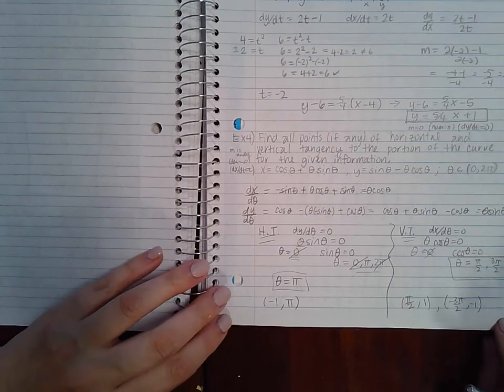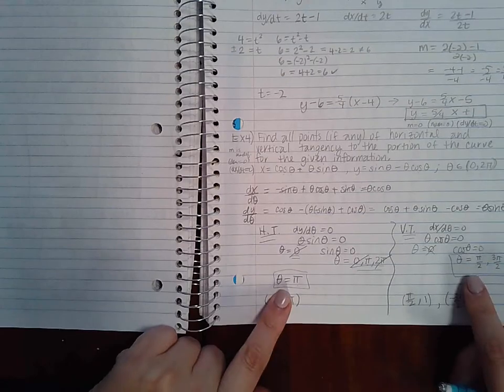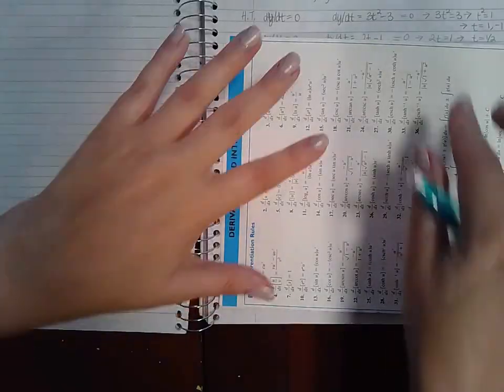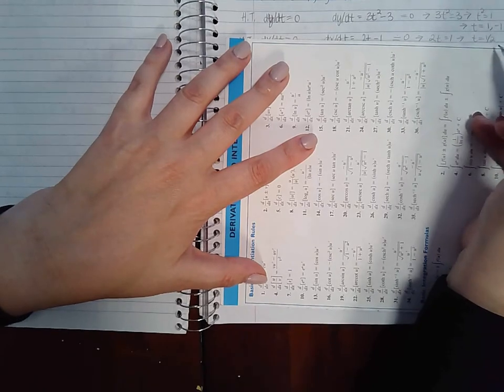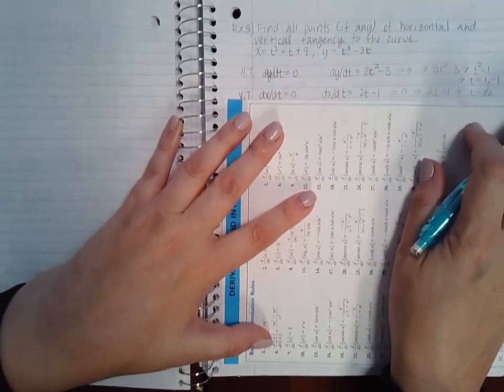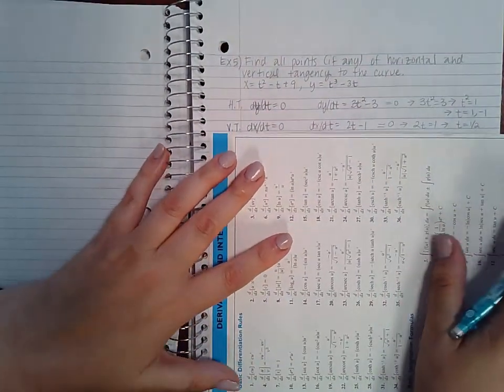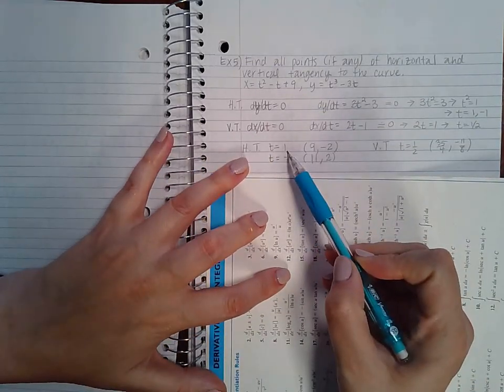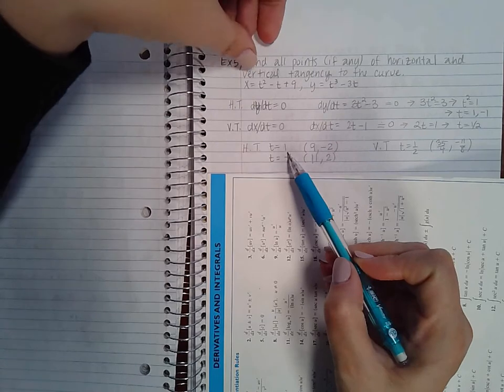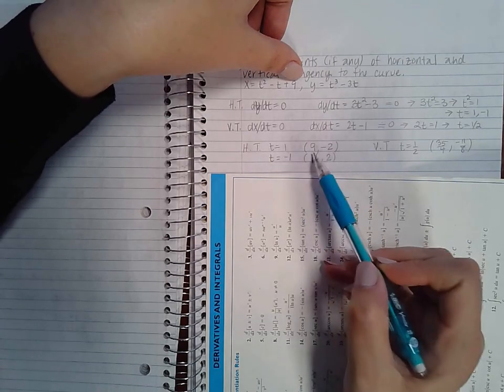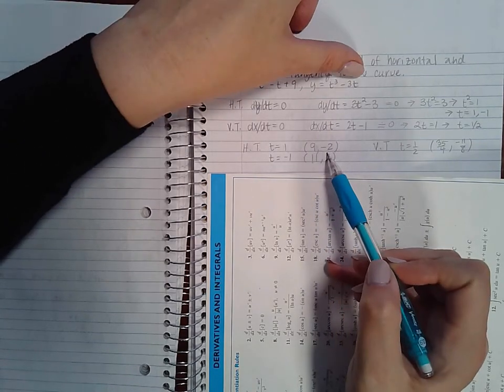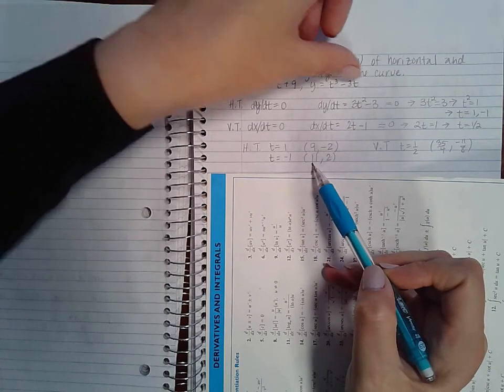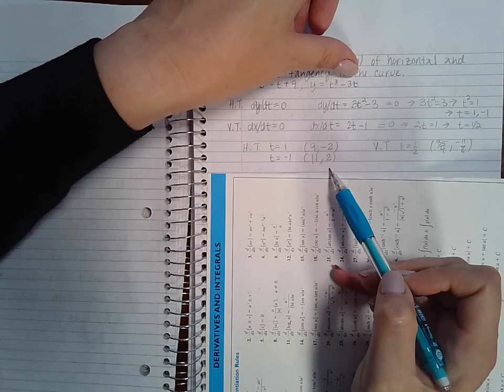Now this works because you just go back and plug it into x and y. So here I ended up with three t values, now I just need to plug them into my x and y functions. If I plug t equal to 1, I get 9 for x and negative 2 for y. If I plug negative 1 in I get 11 for x and 2 for y.